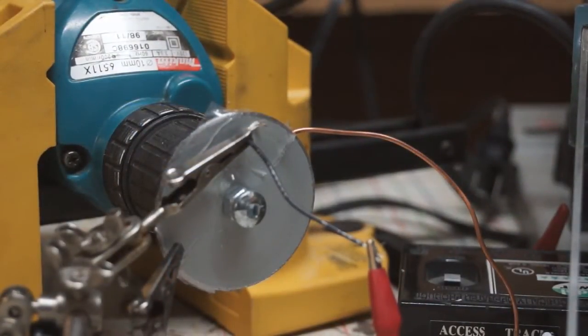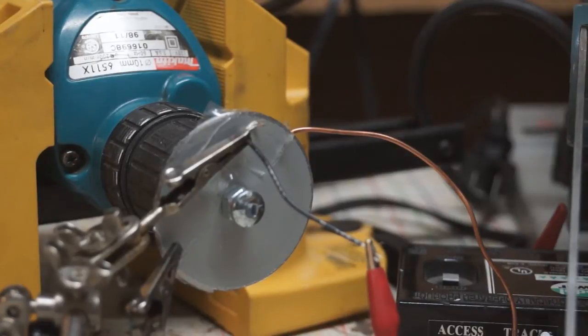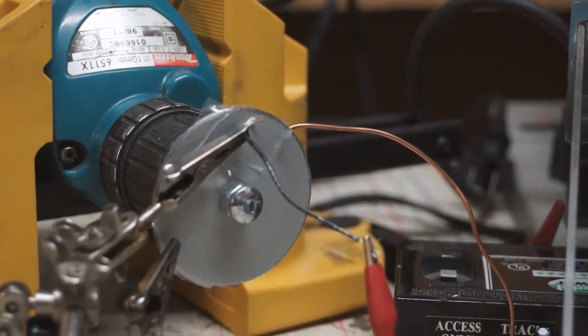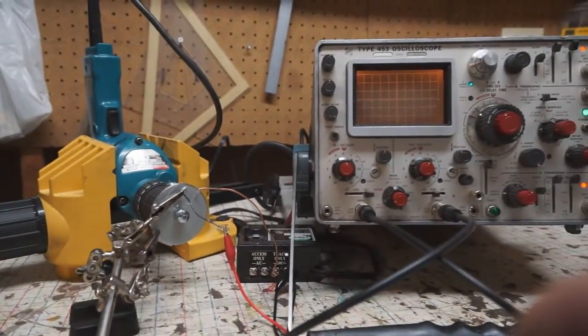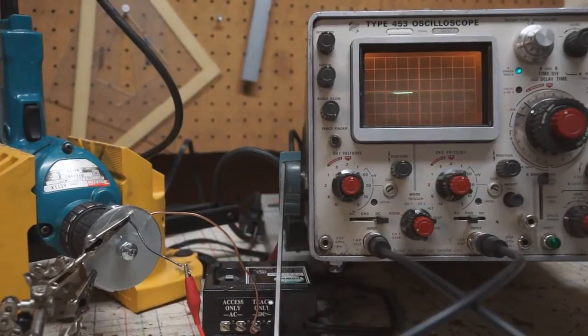To better illustrate how a rotary encoder works, I've built one. In this first example, I'm only using one contact point on this wheel. The wheel is made of metal and half of it is masked with plastic. When the wire, that contact point, touches the metal, it will show on the oscilloscope.